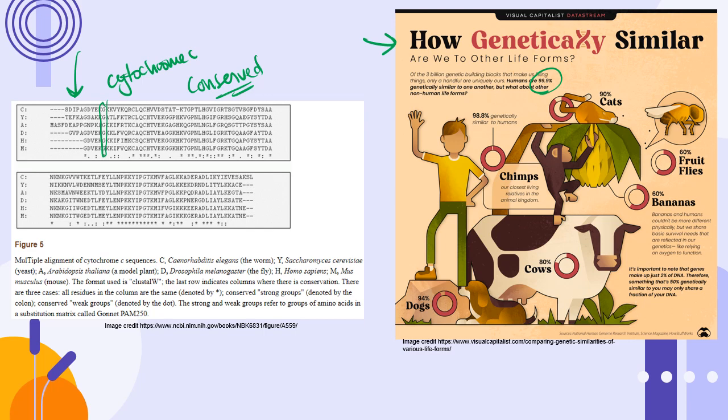But we're also super similar to other organisms. We're 90% the same DNA as cats, 60% the same as fruit flies and bananas. It's pretty fabulous how similar we are to other organisms because a lot of our DNA is conserved.